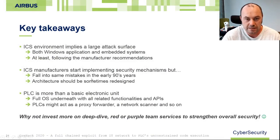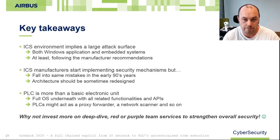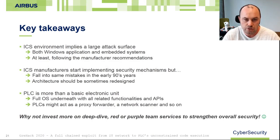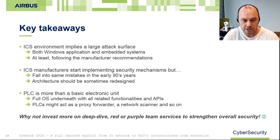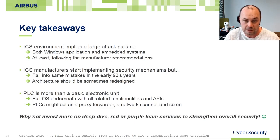An ICS system is composed of many parts — we found many Windows appliances and many embedded systems in it. The attack surface is very huge, so please at least follow best practices like disconnecting the engineering station when not in use, or implement network segmentation and add security appliances like firewalls or IDS.